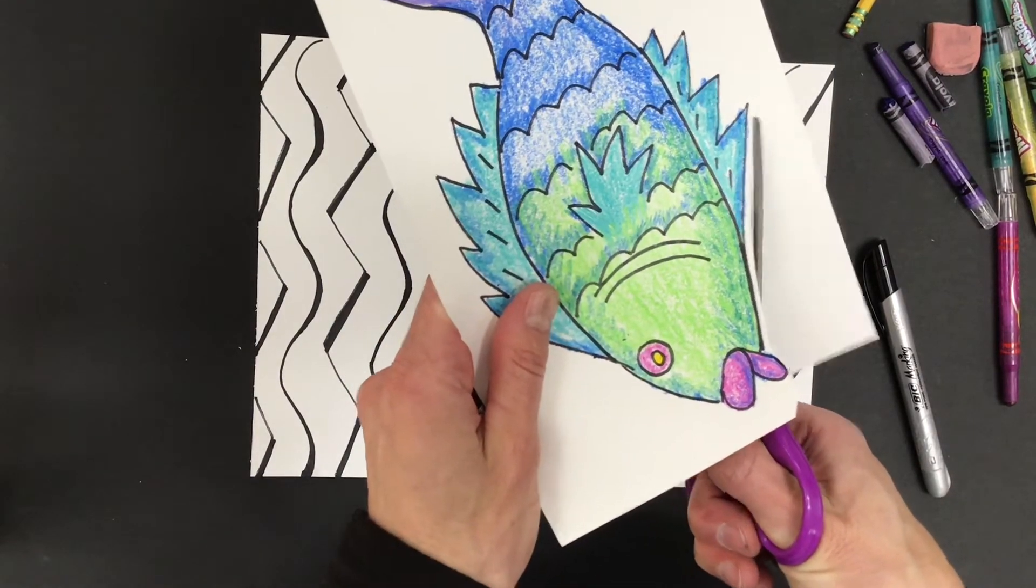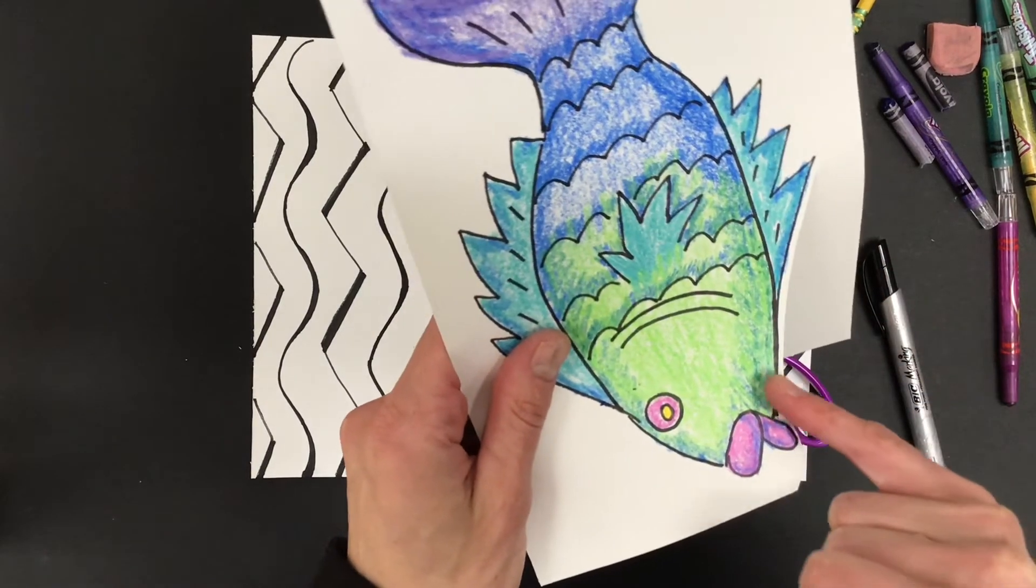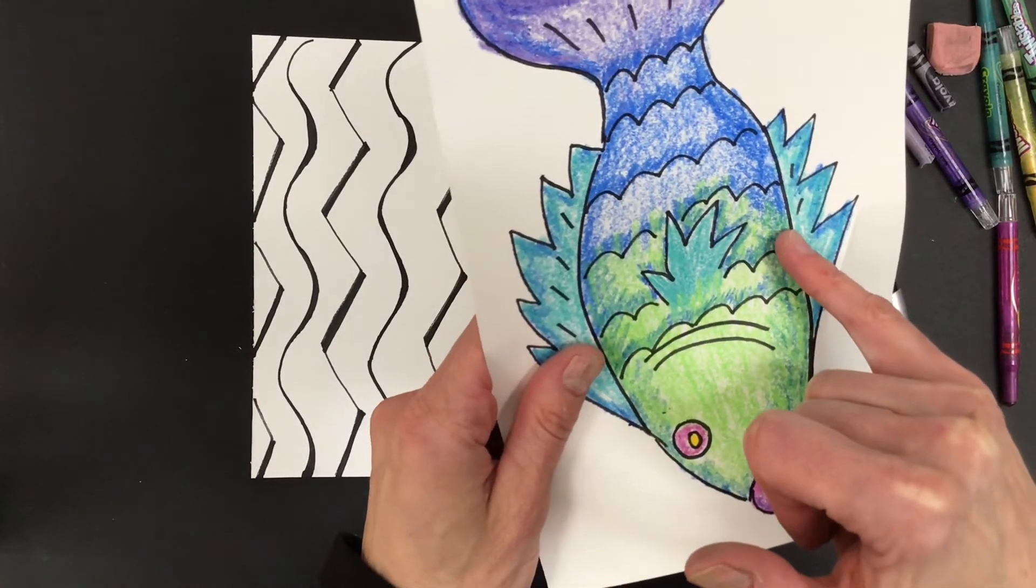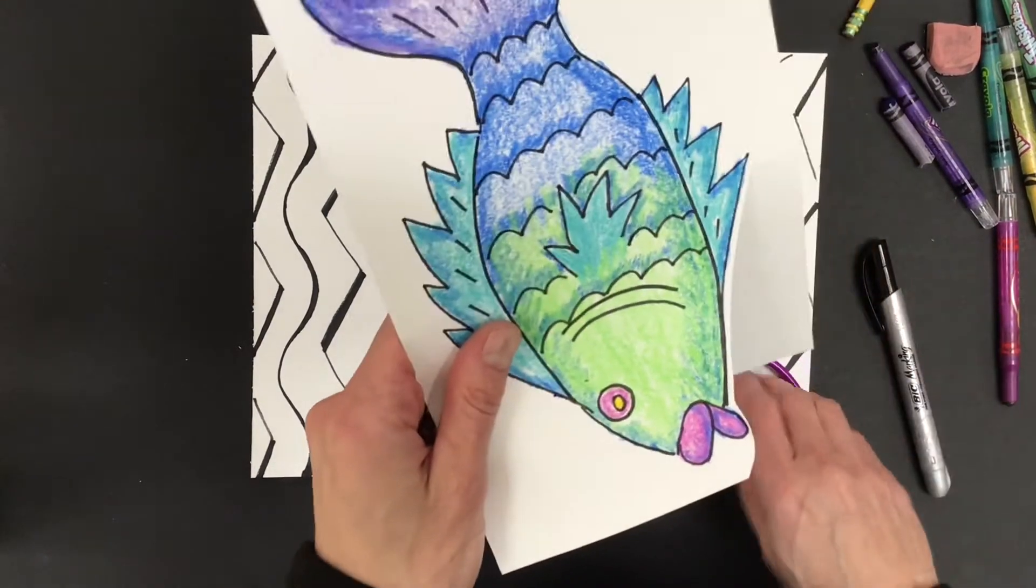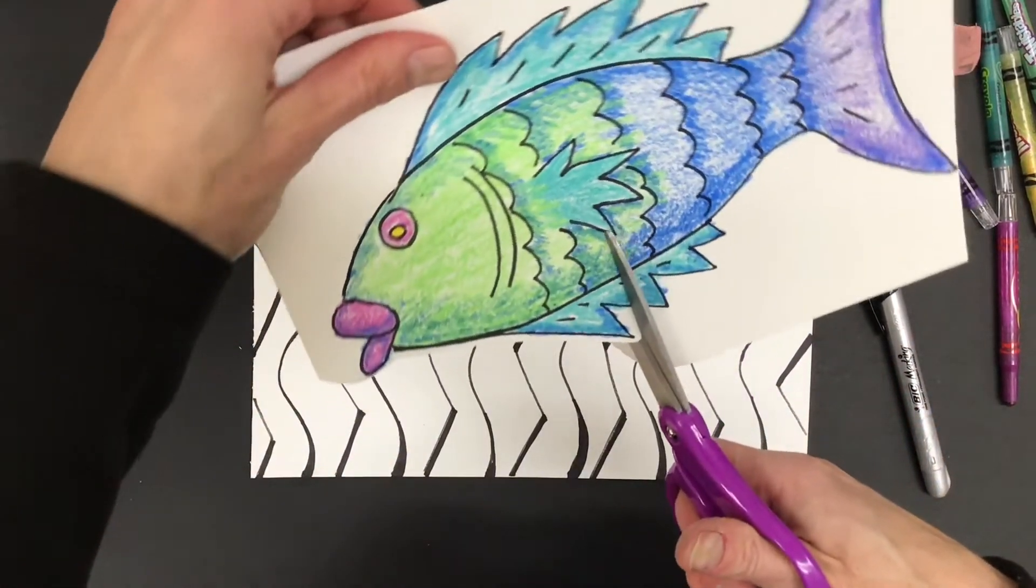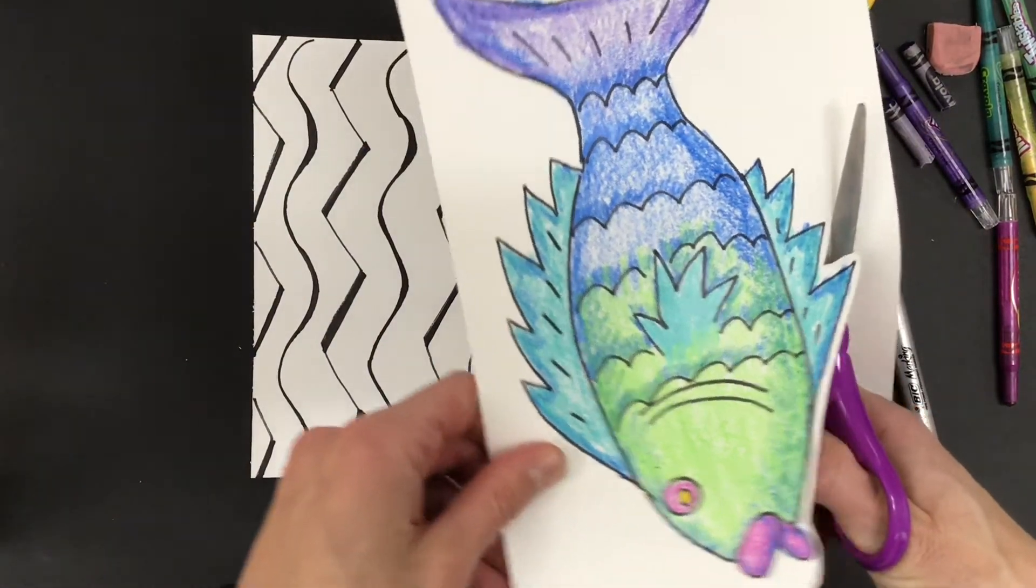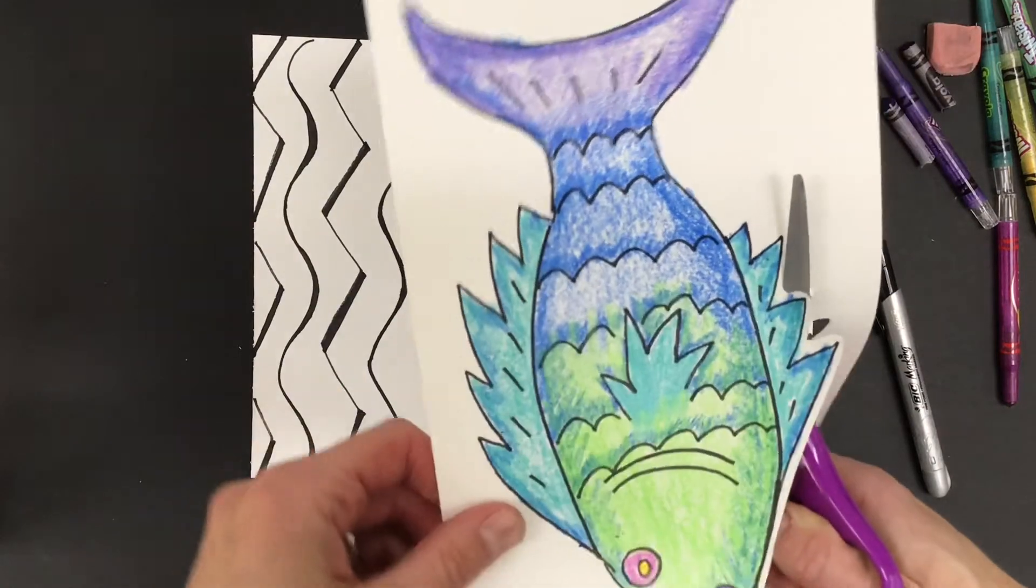When I'm cutting too, remember to leave a little bit of that white space. Because if I cut on the line, I might actually cut parts of my project off. I don't want that to happen. So now I'm going to move that paper going in, coming back. This is a slow process. Please take your time. There is no rush.